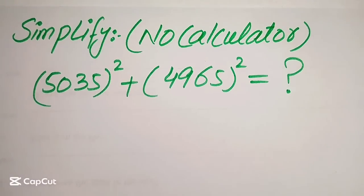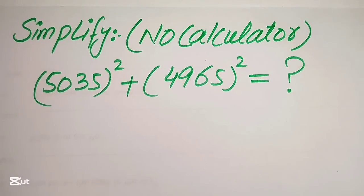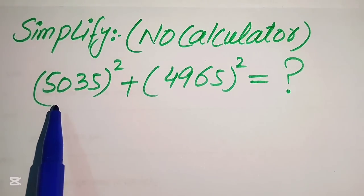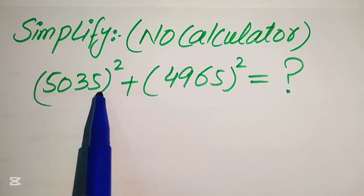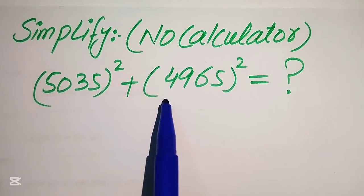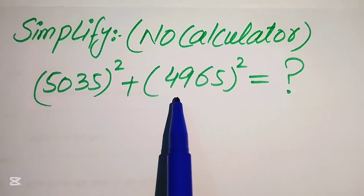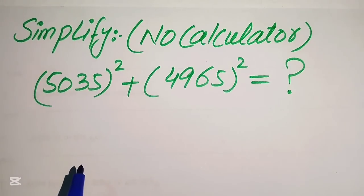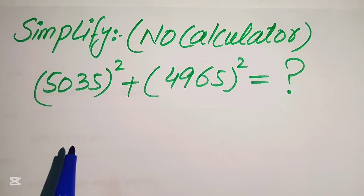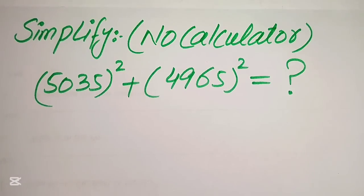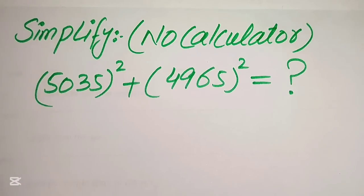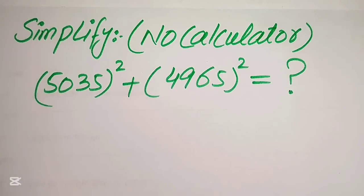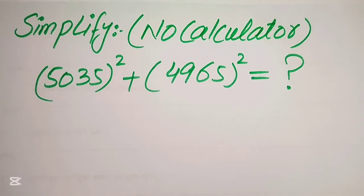Hello everyone. How to simplify this nice algebraic expression: 5035 whole square plus 4965 whole square. We will write this algebraic expression into simplified form. Note that a calculator is not allowed in this problem — we will show all of the working on paper.